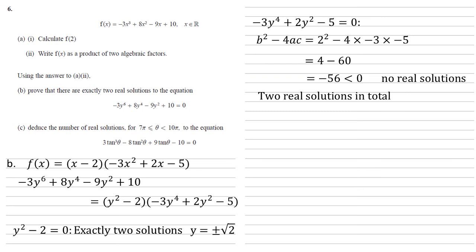We now want to deduce the number of real solutions for theta between 7π and 10π for the equation 3 tan cubed θ minus 8 tan squared θ plus 9 tan θ minus 10 equals 0. Comparing this to f(x), it's the same form — x is now tan θ and everything has been multiplied by negative 1. But as it's still equal to zero, we're going to have the same solutions.